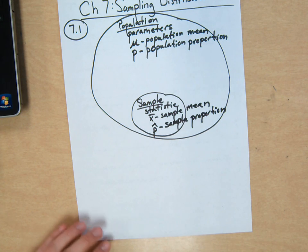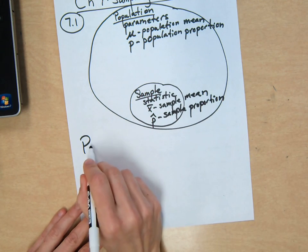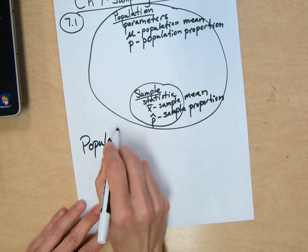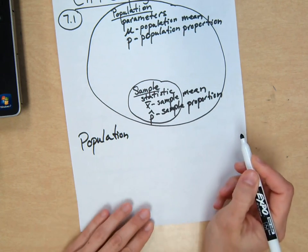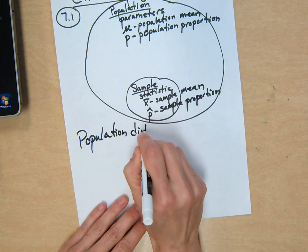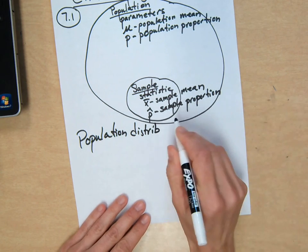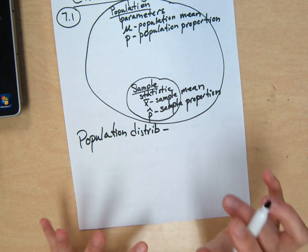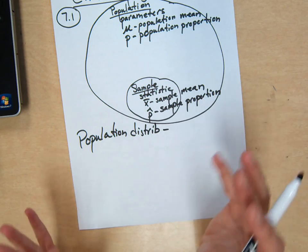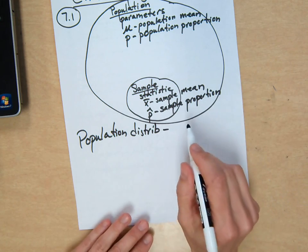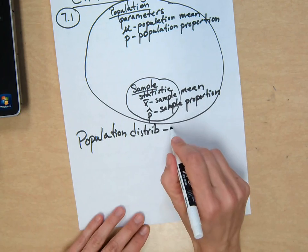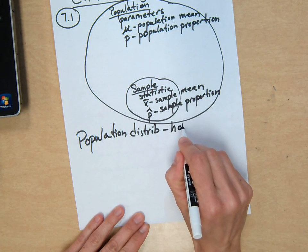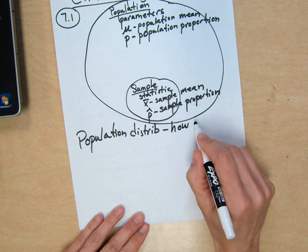So a population distribution. Population distribution. I'll abbreviate distribution. If we already knew that, if we already knew how many of you watch Empire or how many average hours you spend, we wouldn't need to take samples. So we usually don't know this. But for your vocabulary, a population distribution is how many of each type in the entire population. And we usually don't know that.